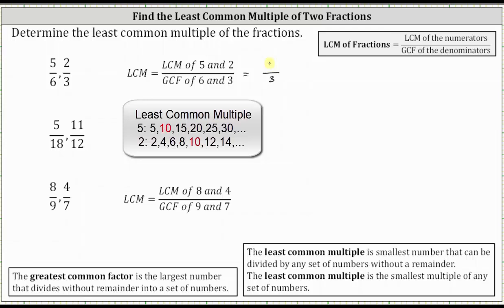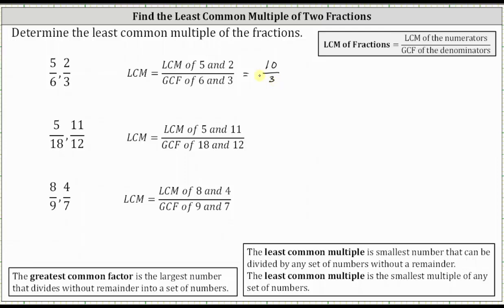10 is also the smallest multiple of both five and two. So 10/3 is the least common multiple of 5/6 and 2/3, which means 10/3 is the smallest fraction that can be divided evenly by both 5/6 and 2/3. It's also the least or smallest multiple of both fractions.